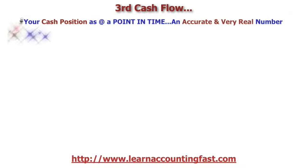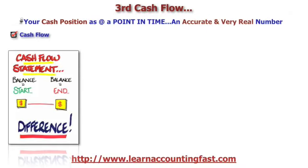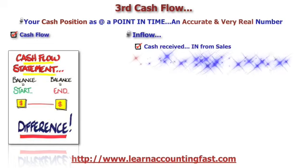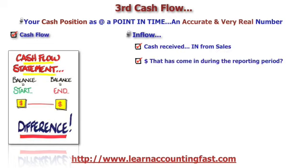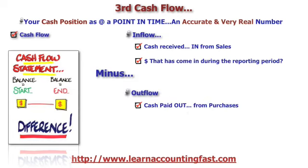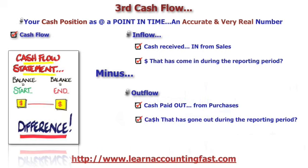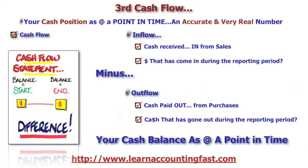And thirdly, we have a cash position — your position at a point in time, a very accurate and real number. Consisting of inflow — cash received in, money that has definitely come in during the reporting period. Minus outflow — cash paid out from purchases, cash that has definitely gone out for the period. And this is your cash balance as at a point in time.